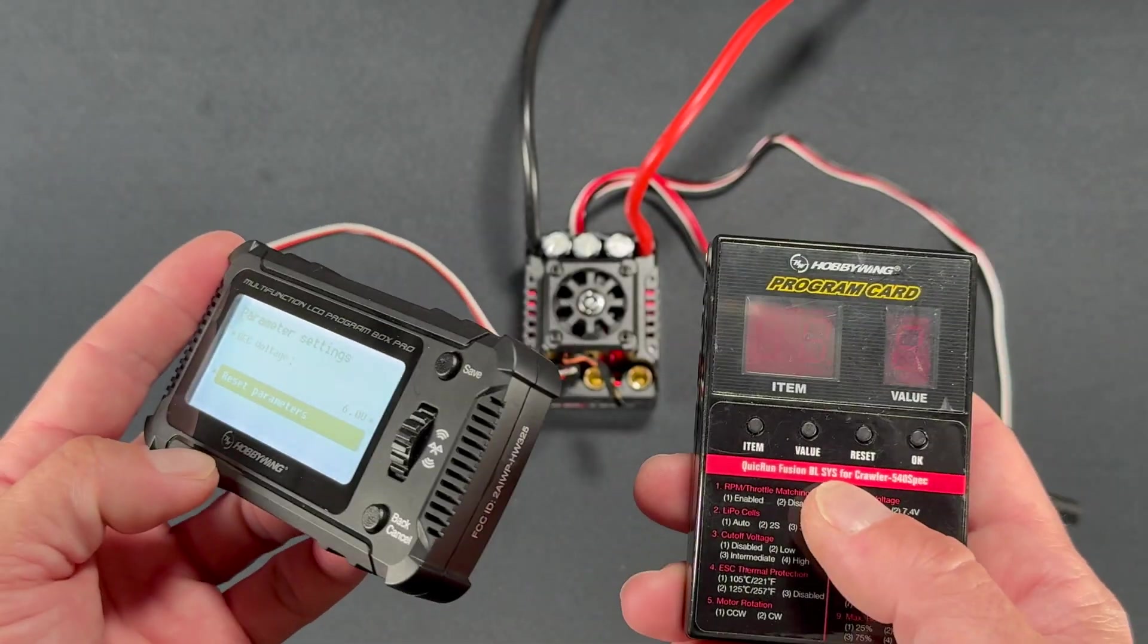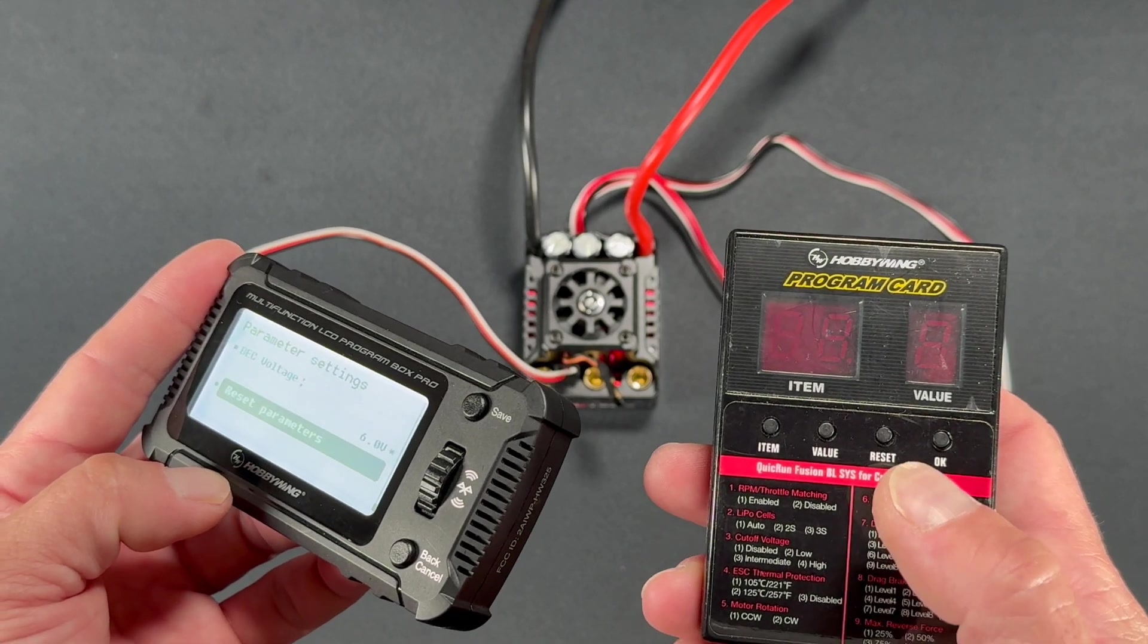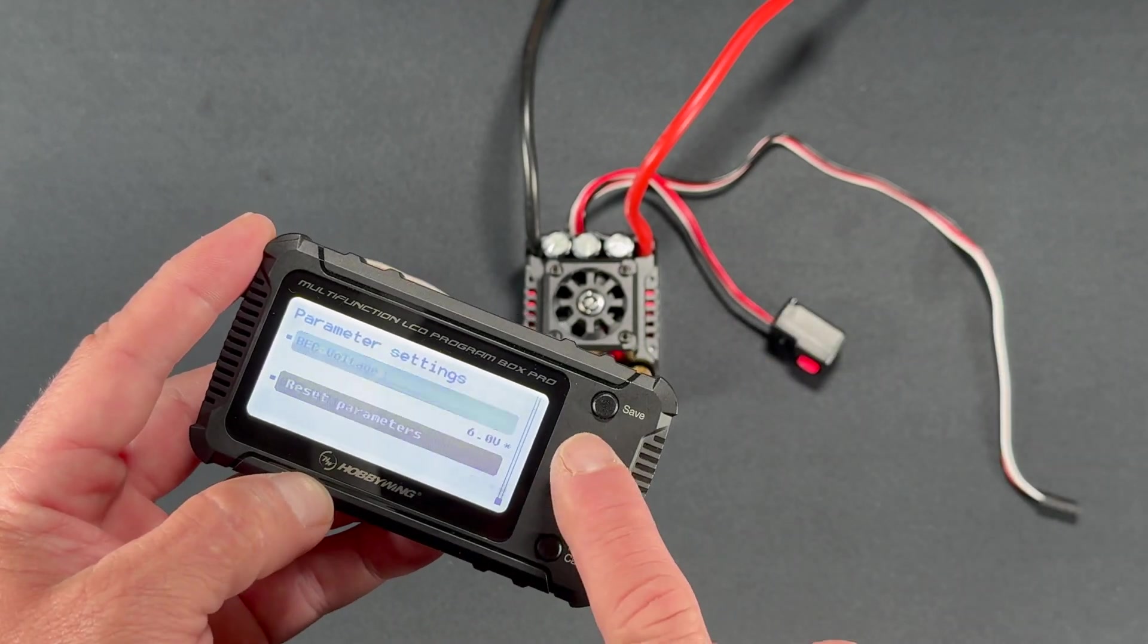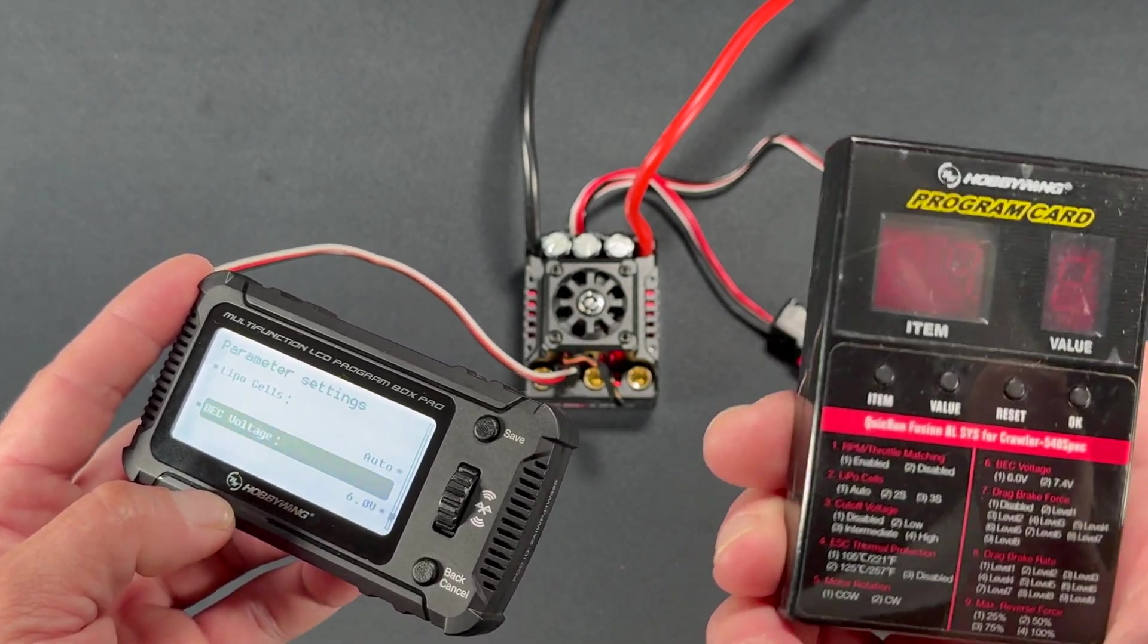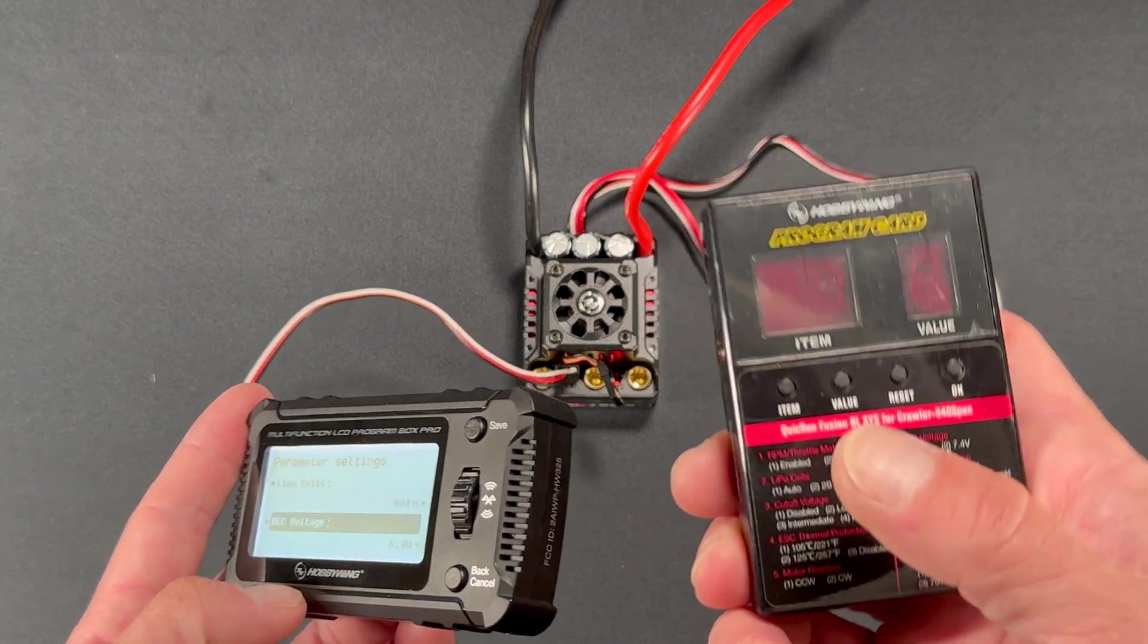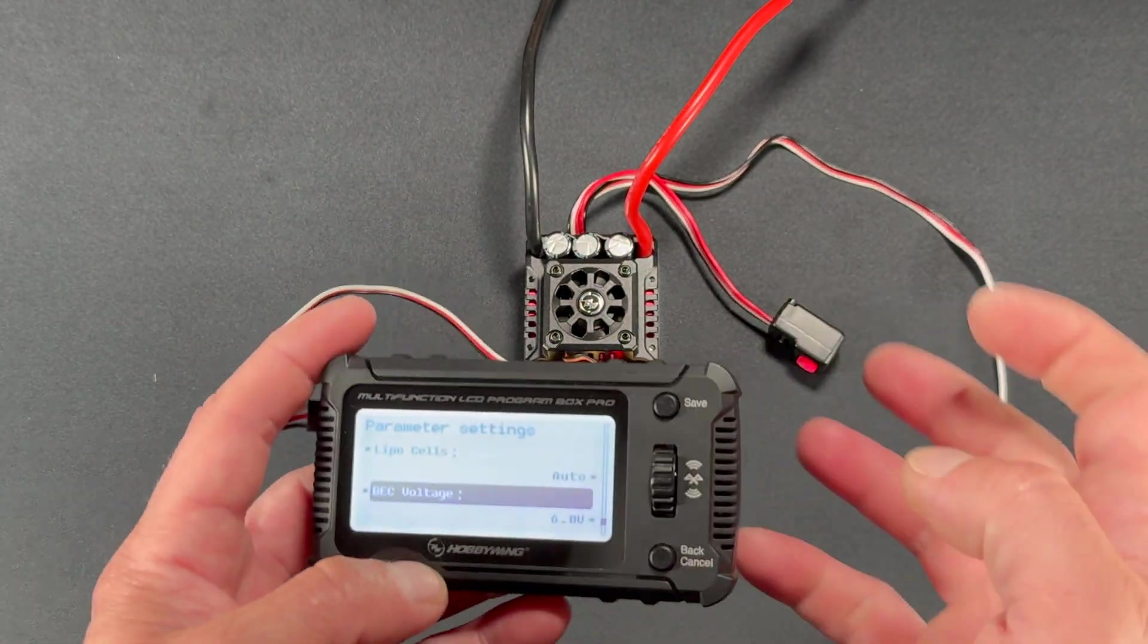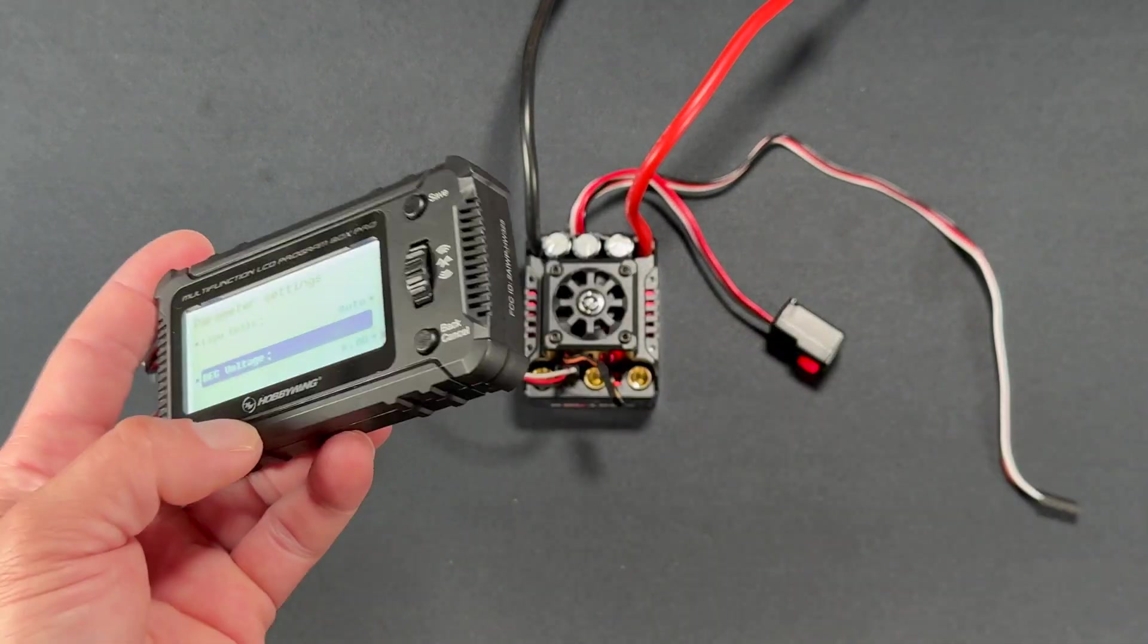One more thing to note is as you're making setting changes, you do have to hit enter or you have to push down to select it and then save to actually save it. And same applies here. As you change that number, you have to hit save to actually get it to stick in the speed control. Sometimes you'll go through, make all the changes, never hit save, nothing sticks in the speed control.